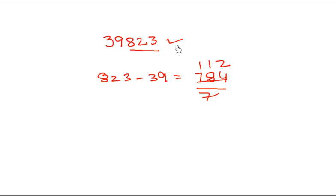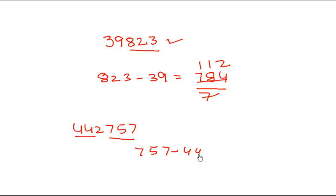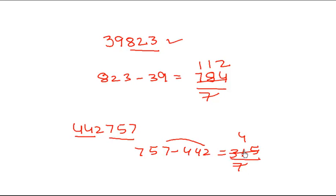Now let's take the number 4427575. Making groups of three: the first group is 757, the second group is 442. We calculate 757 - 442 = 315. Checking 315 by 7: seven fours are 28, seven fives are 35 — remainder is zero. So 315 is divisible by 7, and hence the complete number 4427575 is divisible by 7.